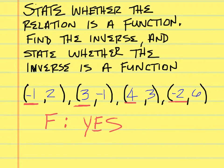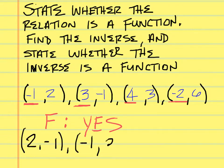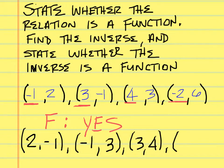To find the inverse of a set of ordered pairs, you simply reverse them. So the reversed pairs are: (2, negative 1), (negative 1, 3), (3, 4), and (6, negative 2).